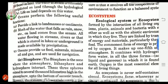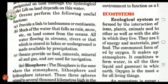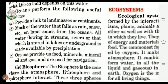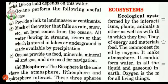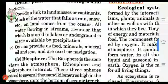Second, much of the water that falls as rain or snow on the land comes from the ocean. Water evaporates from the ocean, reaches the clouds, undergoes condensation, and comes back down as precipitation. All water flowing in streams and rivers, or stored in lakes or underground, is made available by the precipitation process.